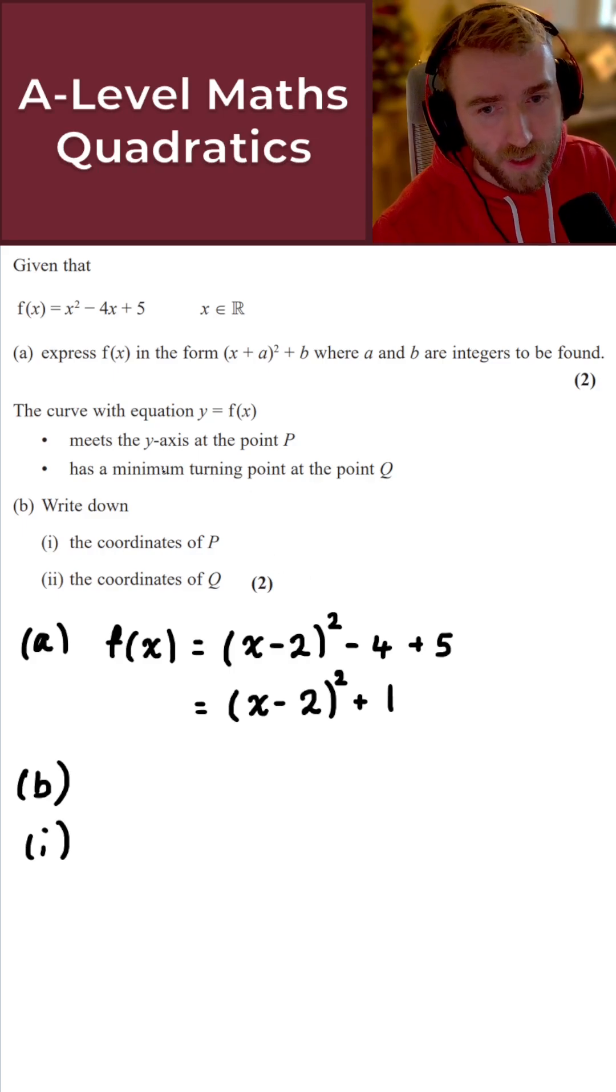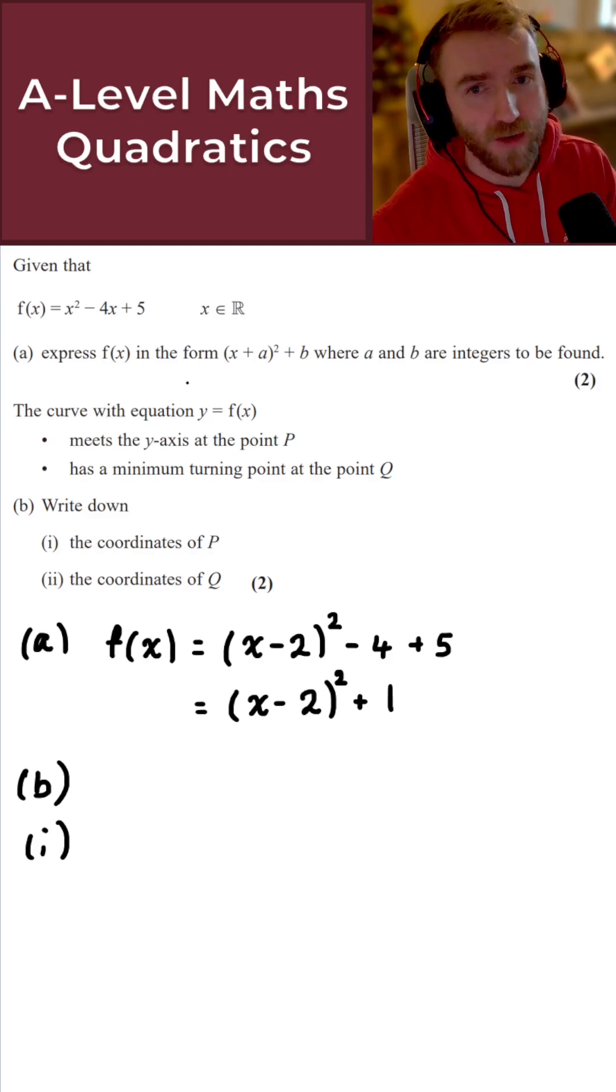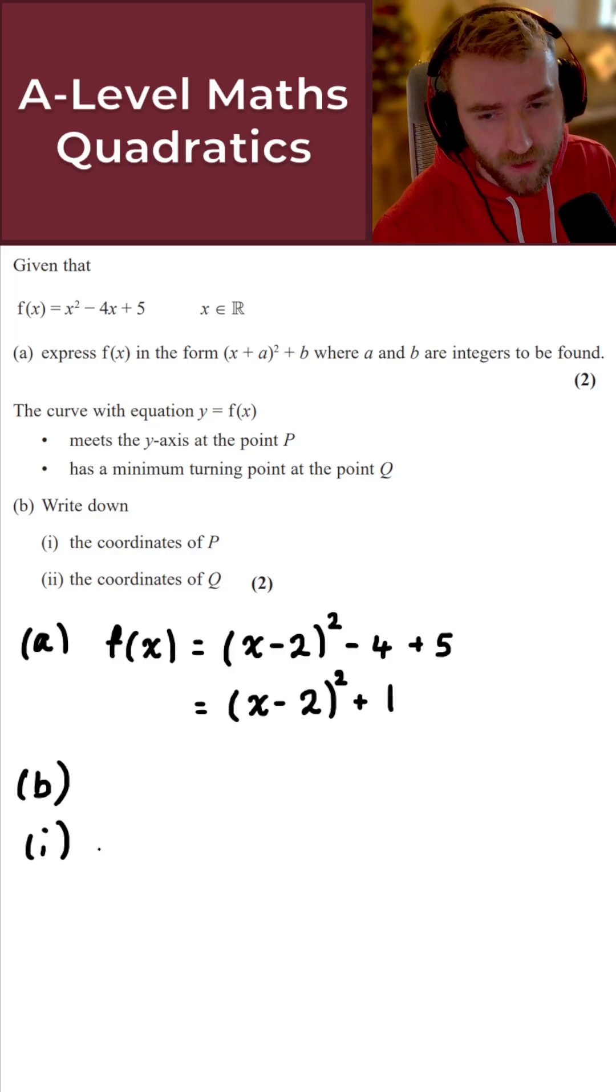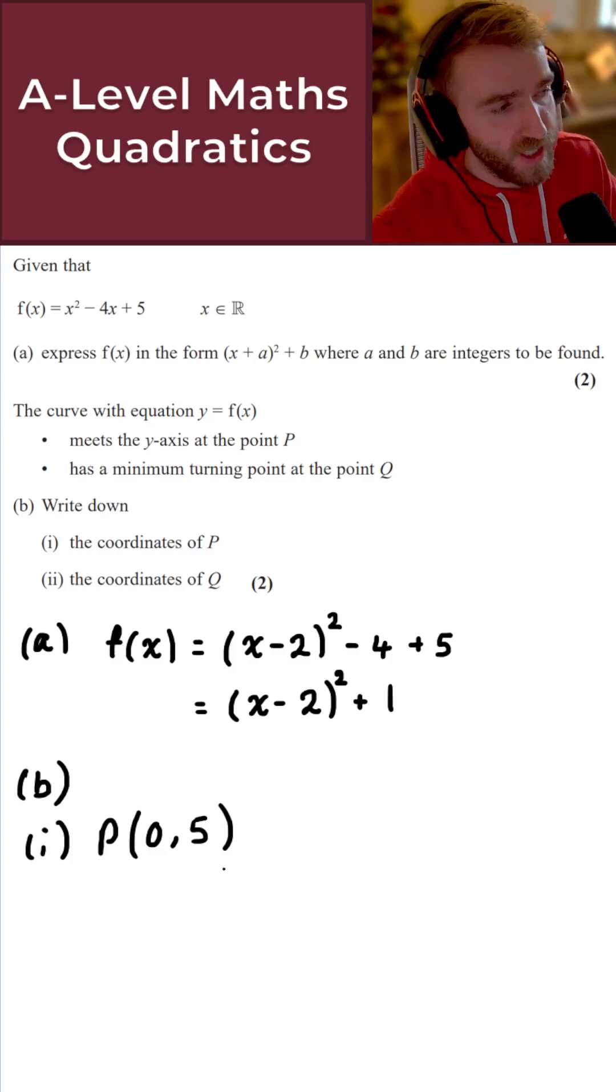The coordinates of P here is for the y-intercept then. So in that case here, it's just going to simply be 0, 5. If x equals 0, we get f of x equals 5 here. So P has coordinates of 0, 5, nice and easy.